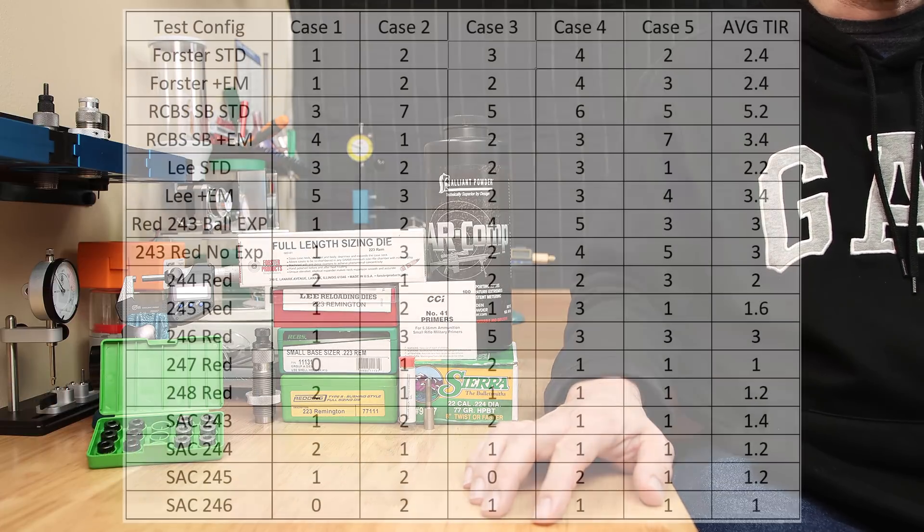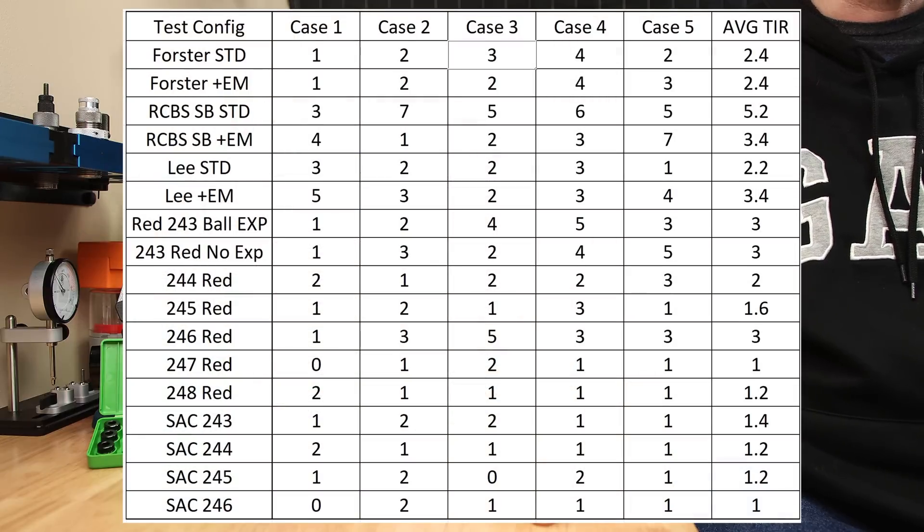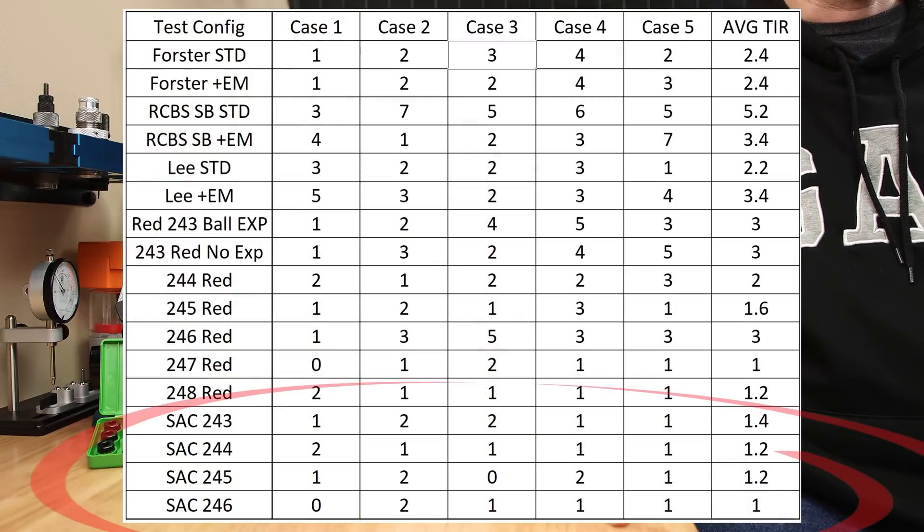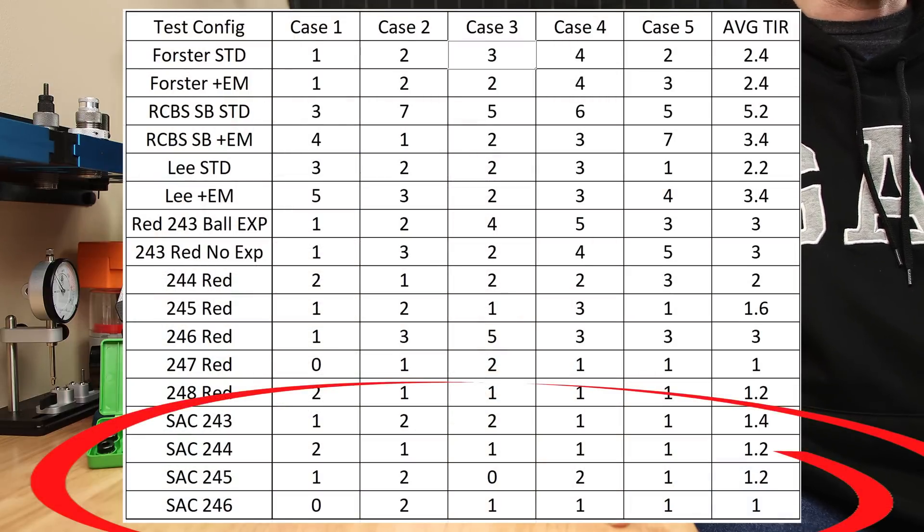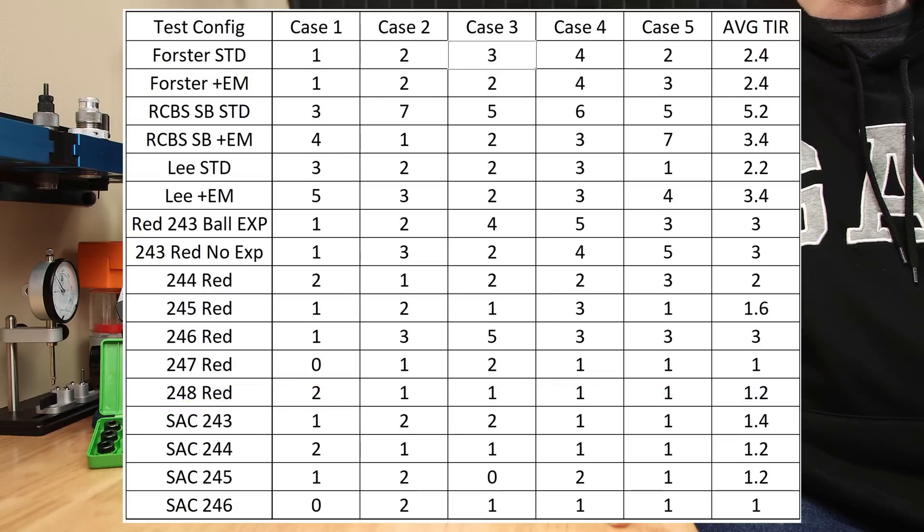Another variable that I think is worth looking at is the runout of all these different configurations. If the only variable you were going to concentrate on was runout, the Short Action Customs bushings are hard to beat. It is consistently the lowest of all the combinations tested.